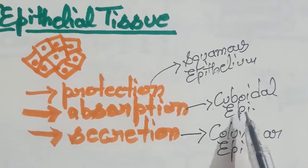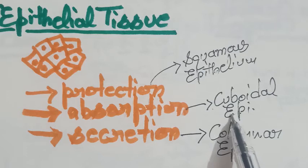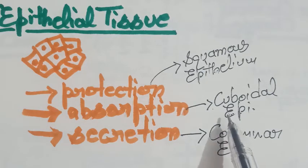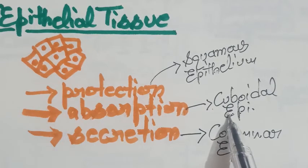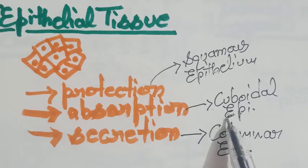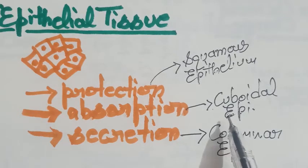The next one, cuboidal epithelium. These cells are cube-like in appearance and occurs in the glands, like salivary, thyroid, pancreas and liver. In the glands, this tissue is specialized to secrete enzymes and hormones.